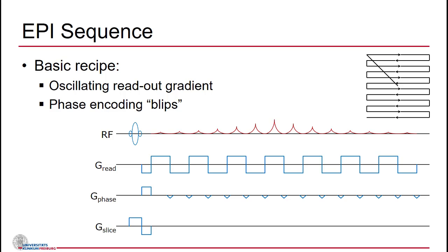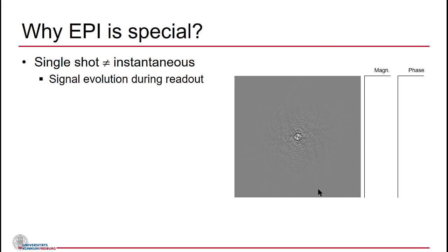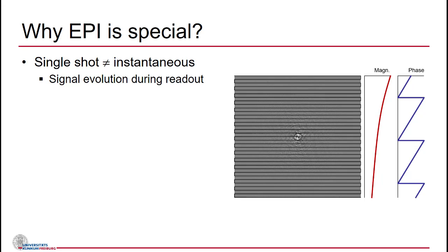The basic sequence — you've seen this — we have the oscillating readout gradient going up and down, and we traverse k-space by going first up, then down, in a series of little blips in the phase-encode direction. What's special about EPI is that single-shot doesn't really mean instant. There is a substantial signal evolution during traversal across k-space, involving both magnitude evolution and phase evolution. To understand all the EPI artifacts, you have to consider both phase and magnitude.